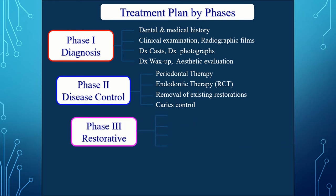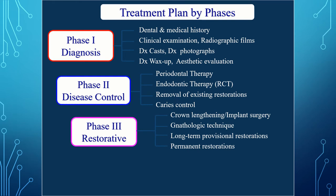Phase three is the restorative phase, which includes crown lengthening if there is a short clinical crown, implant surgery if the patient consents, and any full-mouth rehabilitation approach if required. In cases where permanent fixed partial dentures are not suitable, long-term provisional restorations are used. Once the bite and occlusion are restored to normal with provisionals, permanent restorations are placed.